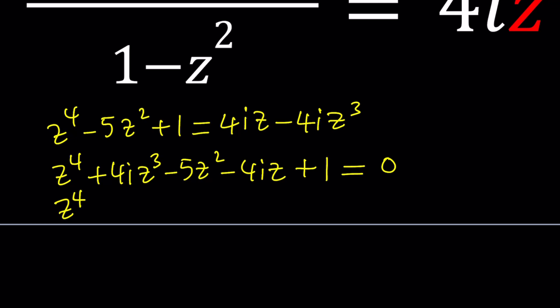Here's what I'm going to do: z to the fourth plus 4iz cubed, and then I'm going to write the negative 5z squared as negative z squared, negative 6z squared, plus z squared. And then minus 4iz and plus 1 equals 0.